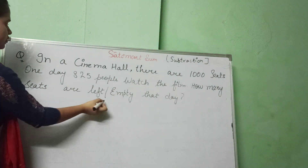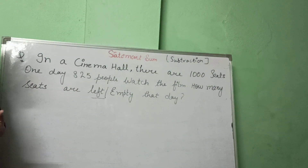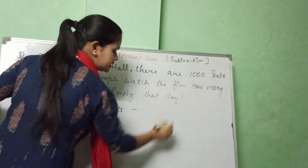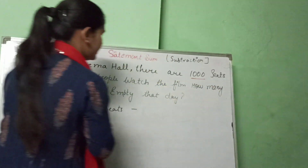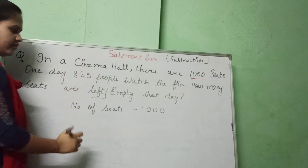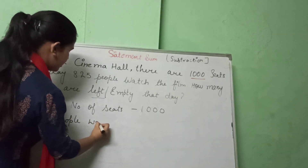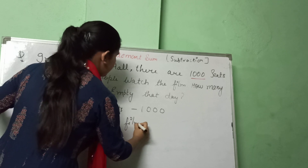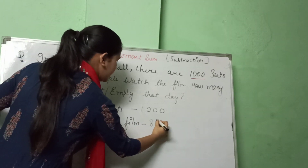Always remember where you see 'left,' we do subtraction. The number of seats in the cinema hall is 1,000. The number of people who watched the movie is 825. We have to find the empty seats on that date.